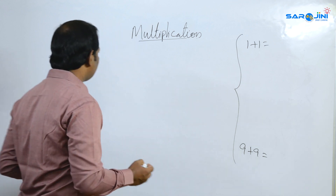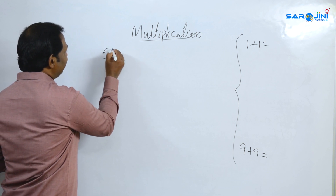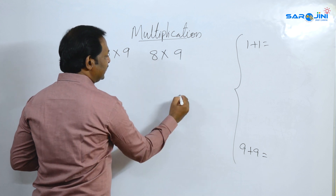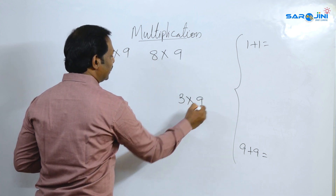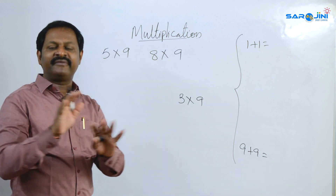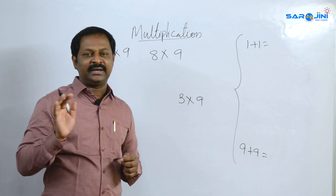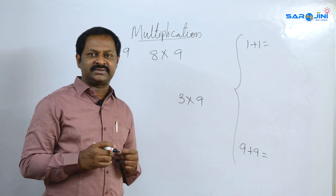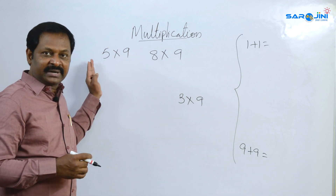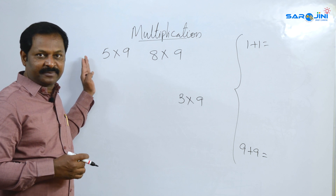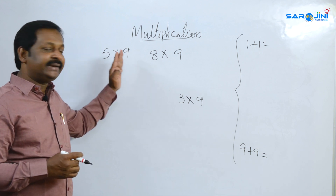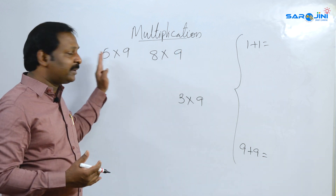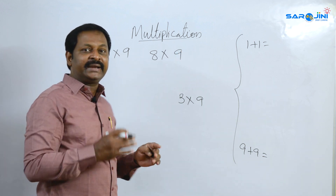I will show you here. Suppose you have 5 multiplied by 9, 8 multiplied by 9, 3 multiplied by 9. No need of a table — without a table we can do this. Because 5 multiplied by 9, 9 multiplied by 9 — if there is 9, we can do this. It is multiplied by 5.